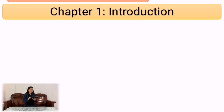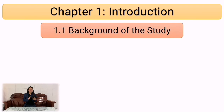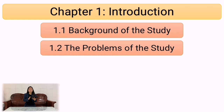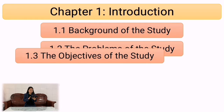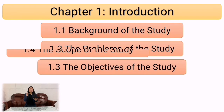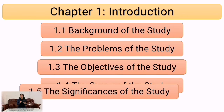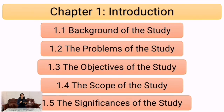In chapter 1, there are five subtopics. The first is background of the study (1.1). The second is the problem of the study (1.2). The third is the objectives of the study (1.3). The fourth is the scope of the study (1.4), and the last is the significance of the study (1.5).